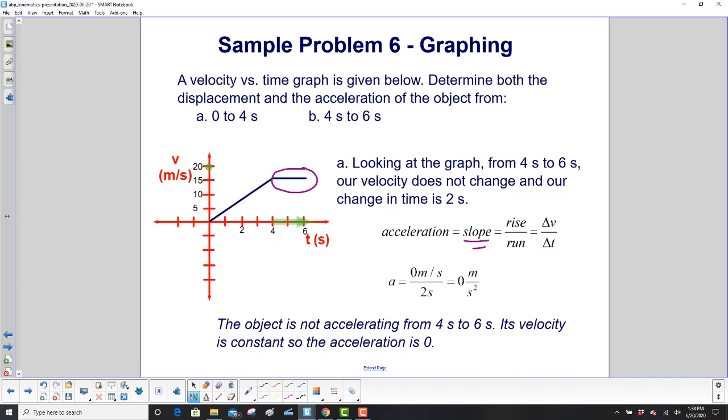We need the slope, which is the rise over run. Change in velocity over time. Change in velocity is zero. It stays the same. Divided by two. Zero divided by anything is going to be zero. So we're not accelerating from 4 to 6 seconds. The velocity is constant. The acceleration is zero.